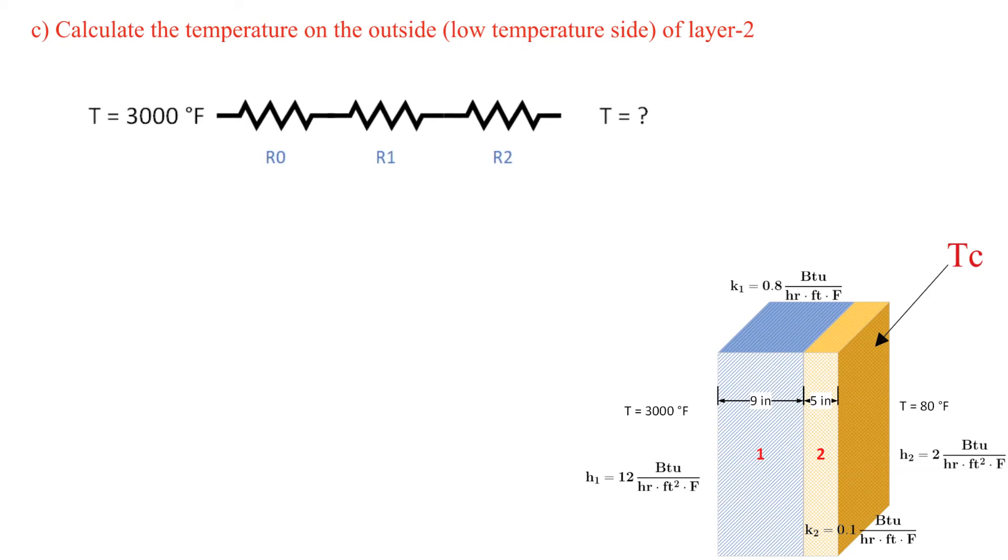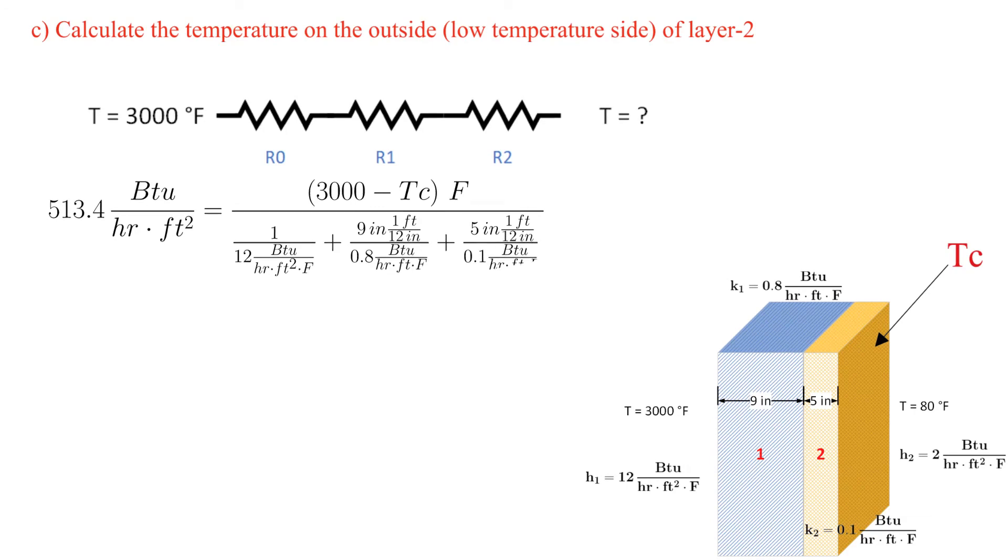Once again, we substitute in the previously determined heat flux from Part A and solve for the unknown temperature. We obtain temperature Charlie is equal to 336 degrees Fahrenheit.